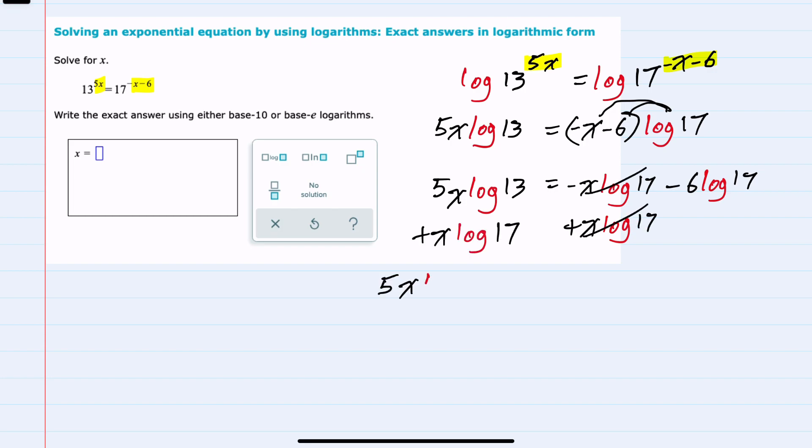We now have 5x log 13 plus x log 17 on the left, and a negative 6 log 17 on the right. Having both of the x's on the left-hand side means that I can factor out an x, leaving me with a 5 log 13 from the first term, and a log 17 from the second term.